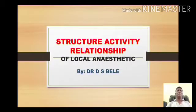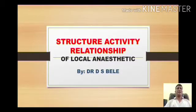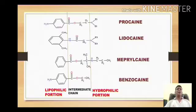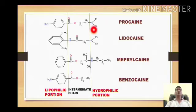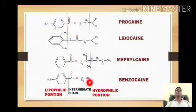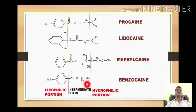Hello dear students. Our today's topic is a very important topic: the structure-activity relationship of local anesthetic agents. For the structure-activity relationship, we will draw some very important structures like procaine, lidocaine, mepivacaine, and benzocaine. If we look at all these structures carefully, we find that all these structures can be divided into three portions.